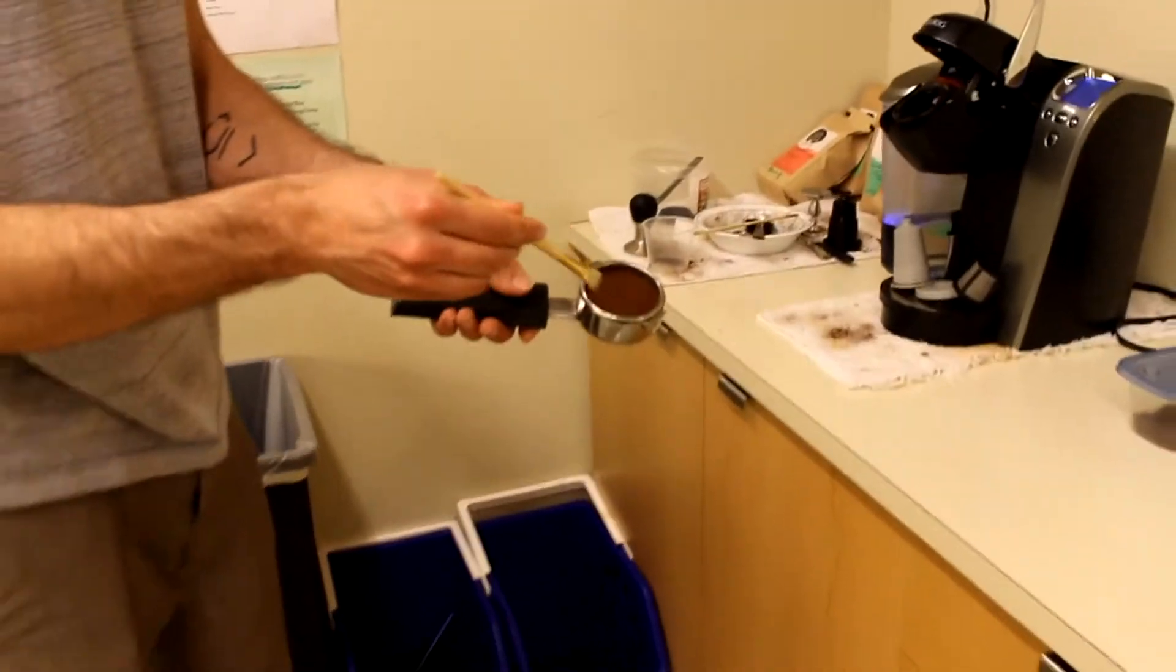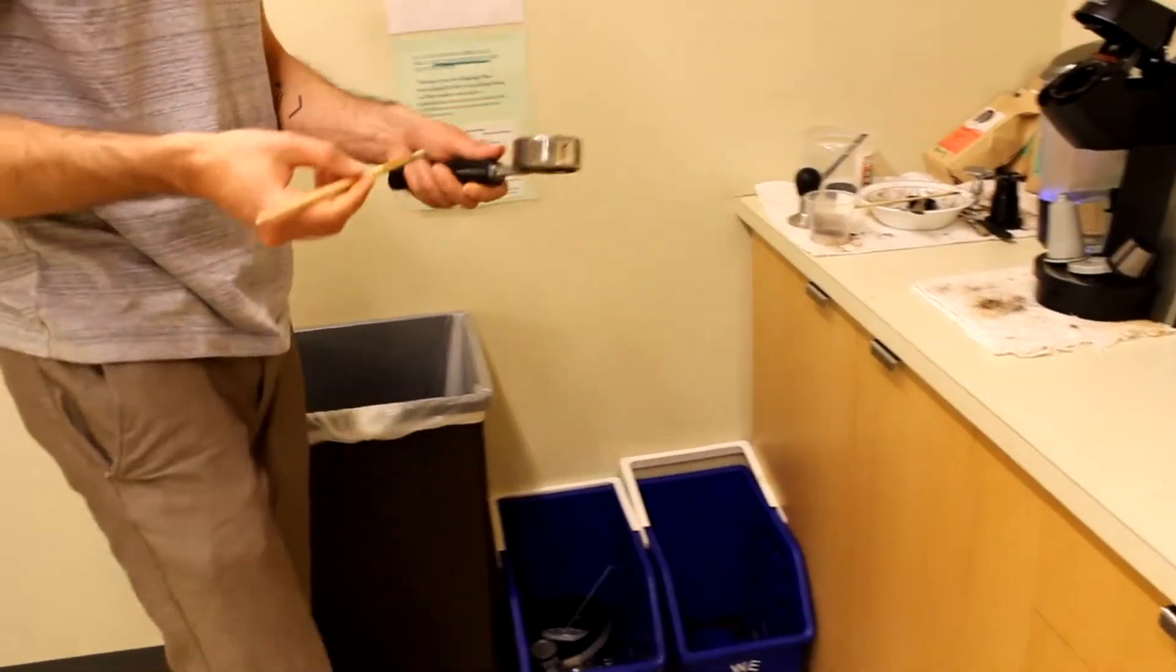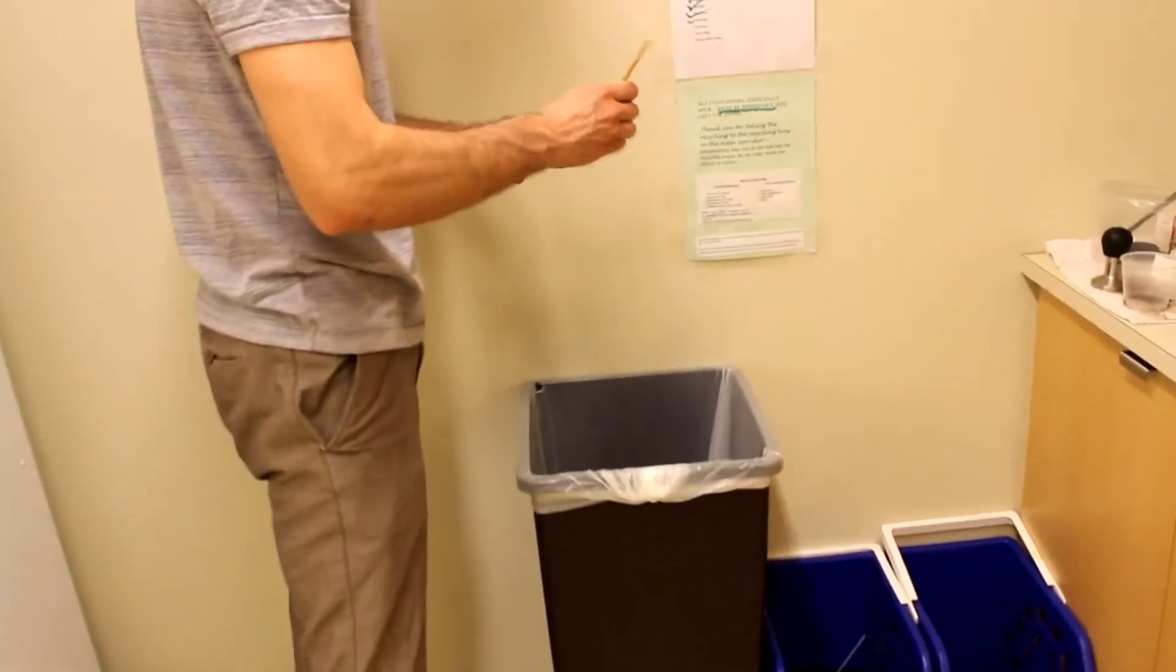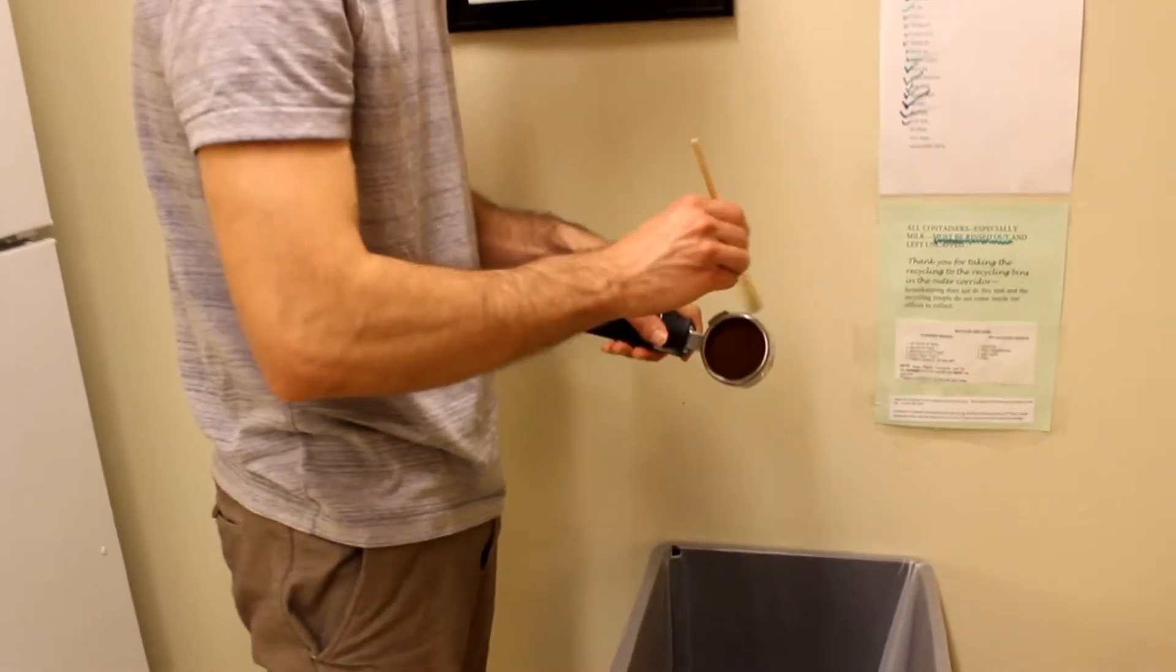You see there's a bunch of coffee on the rim here. I brush it off because when you put this in the machine, the machine gets really dirty and full of coffee grinds. Take this little paintbrush and brush it off.